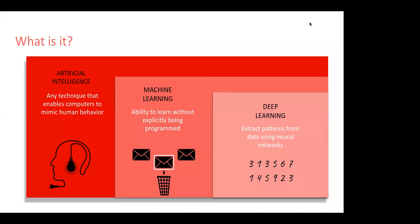Machine learning is a subset of AI which focuses on teaching an algorithm how to take information and do this without being explicitly told the sequence of rules, but instead learn the sequence of patterns from the data itself.